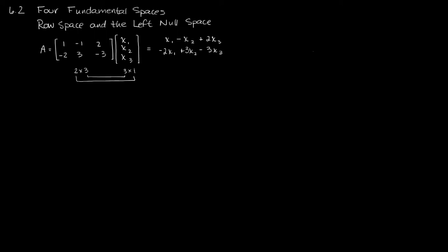If I write this multiplication this way instead, if I said, for example, this is 1, negative 2 times x1 plus negative 1, 3 times x2 plus 2, negative 3 times x3, then I might even do this, I might say that's my first vector A, first column vector A, x1 plus column vector A2 times x2 plus column vector A3 times x3.